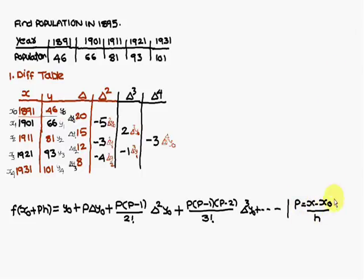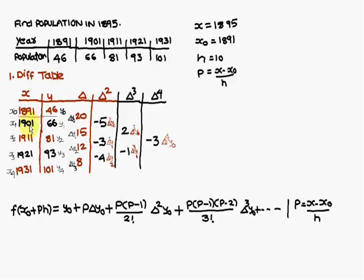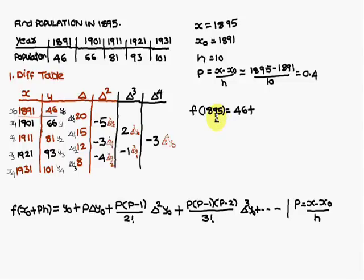The p value is defined as p = (x − x0) / h. Here x equals 1895, x0 equals 1891, and h equals 10 because the interval between consecutive years such as 1891 and 1901 is 10. Therefore p = (1895 − 1891) / 10 = 0.4. Substituting into the formula: f(1895) = y0 + p·delta y0, where y0 is 46, p is 0.4, and delta y0 is 20, giving 46 + 0.4 × 20.